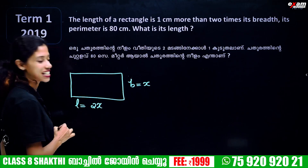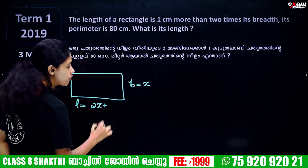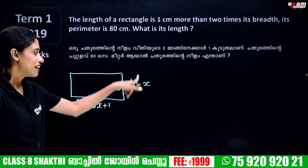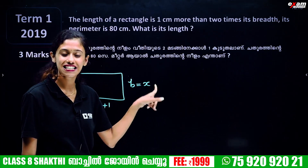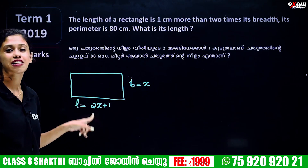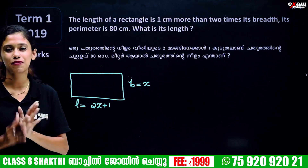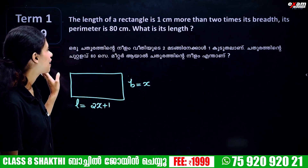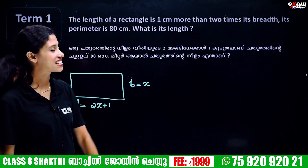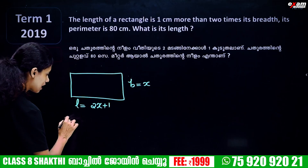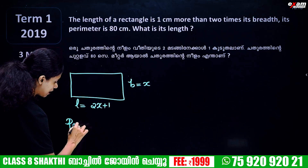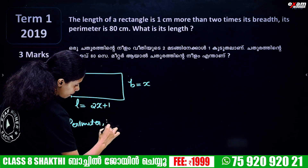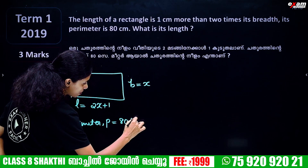Now for the next question: the length is 2 into x plus 1, and the breadth is x. The perimeter is 80 centimeters. So P equals 80 cm.